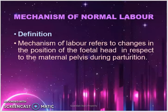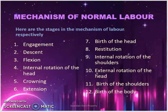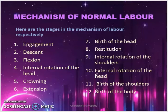The stages of the mechanism of labor are: engagement, descent, flexion, internal rotation of the fetal head, crowning, extension of the fetal head, restitution, external rotation of the head with internal rotation of the shoulders, birth of the shoulders, and birth of the body. These 12 stages can be summarized to about nine stages, as some are usually combined.